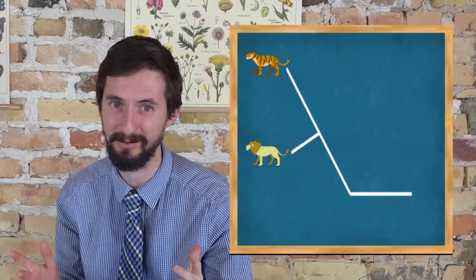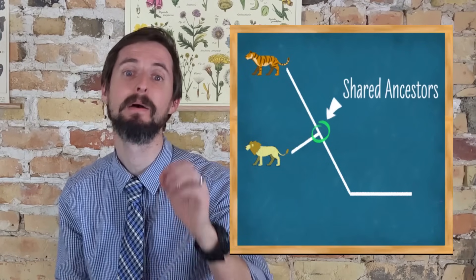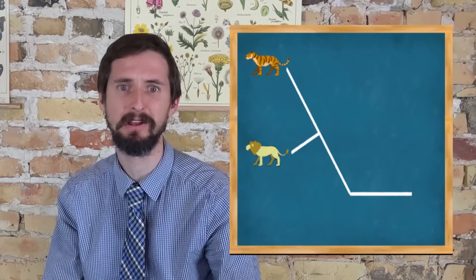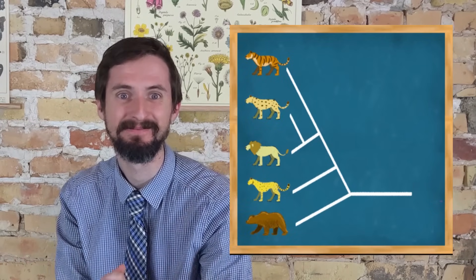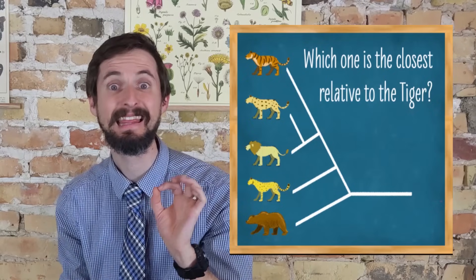Yes, lions and tigers share common ancestors, but what happens if I add in a leopard, a cheetah, and a grizzly bear? Which one is the closest relative to the tiger?